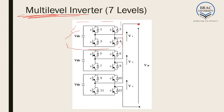The first full-bridge inverter is connected to the output and in series with the next full-bridge inverter. Again, that is connected in series with the next full-bridge inverter, and from the last full-bridge inverter we get the output. So the multi-level inverter is actually full-bridge inverters connected in series, but the switching pattern is a little different than individual full-bridge inverters.